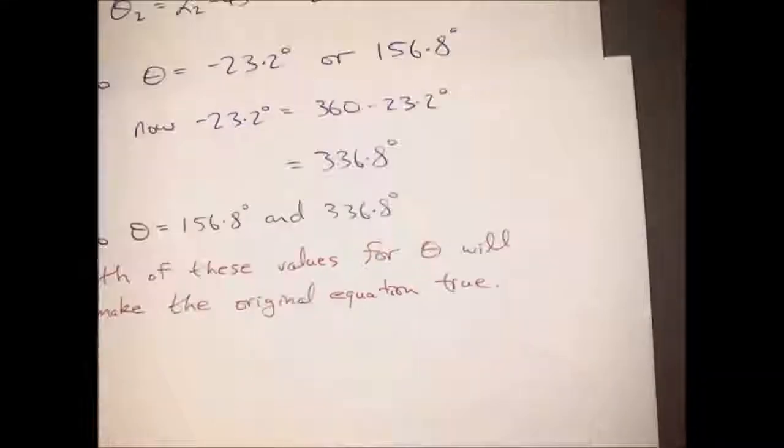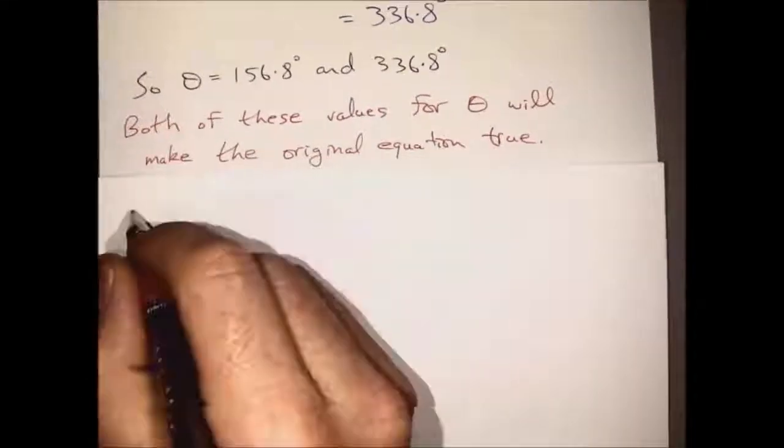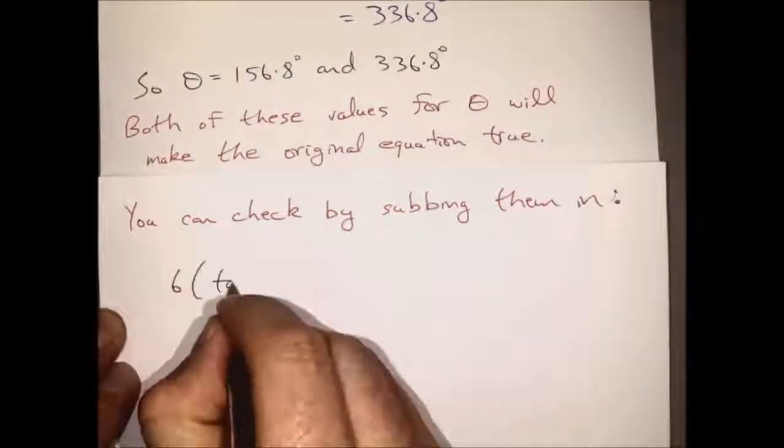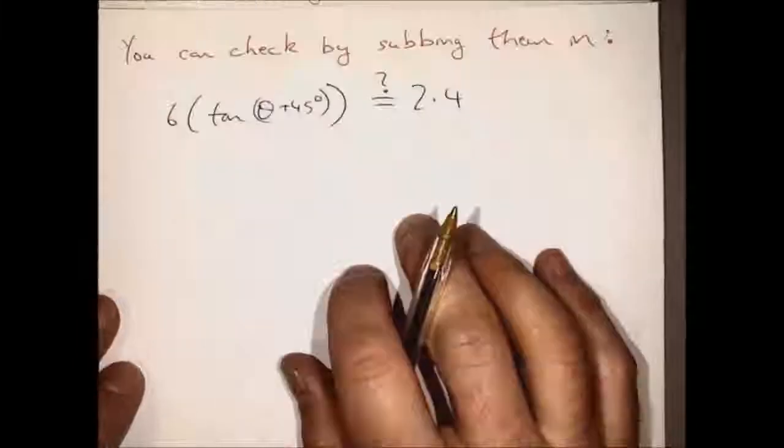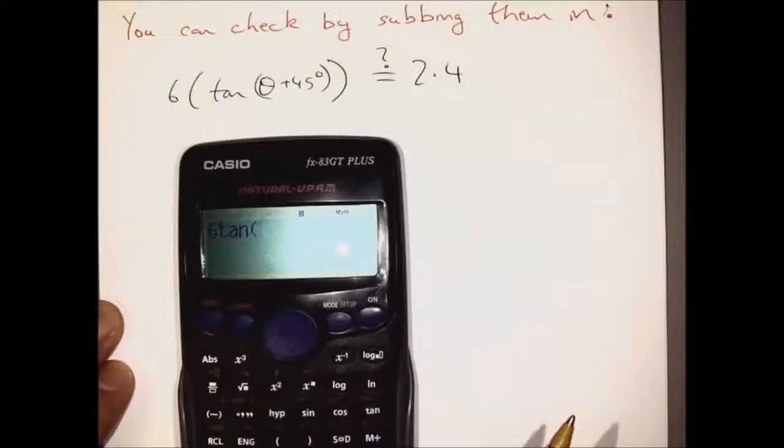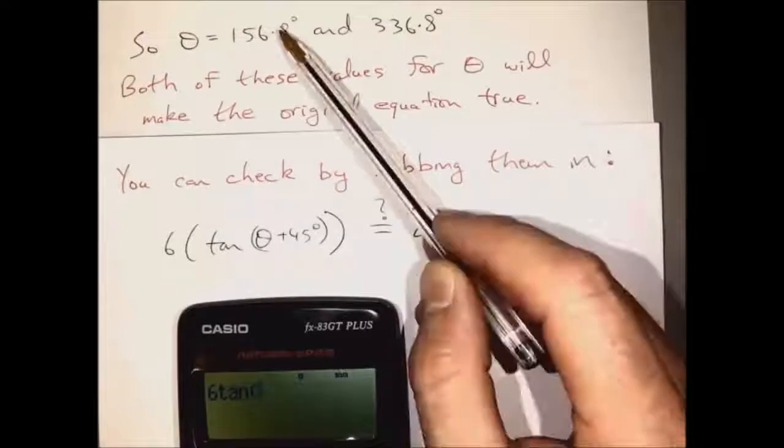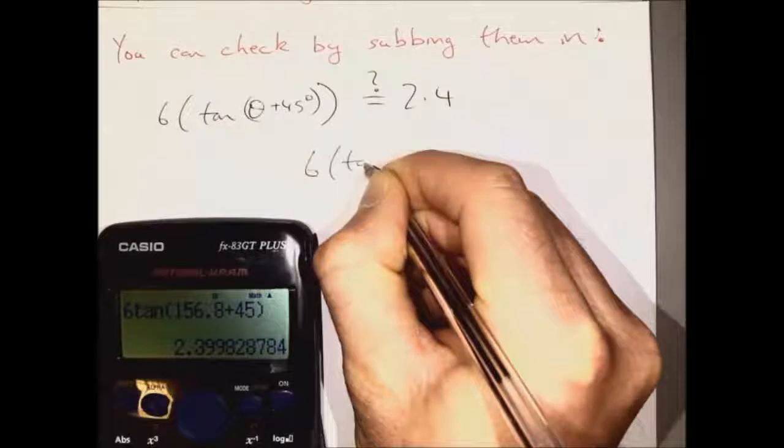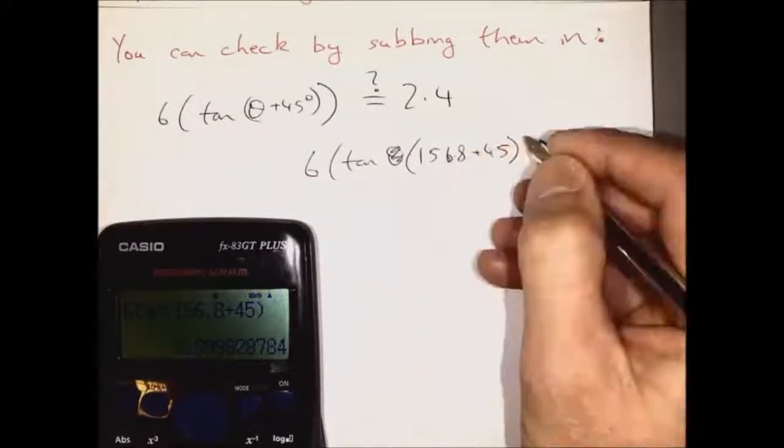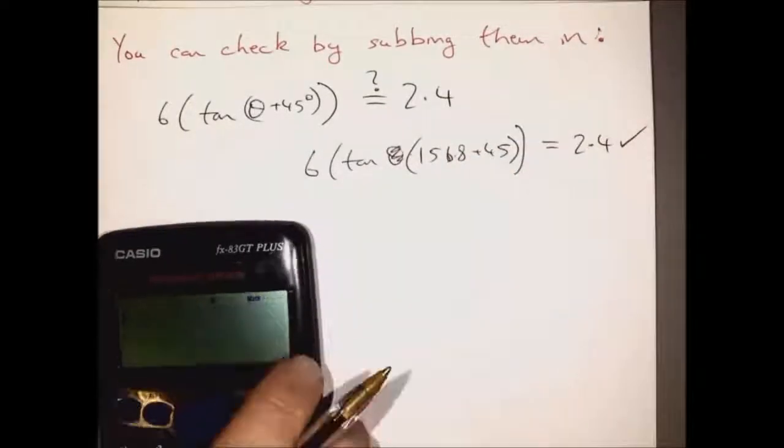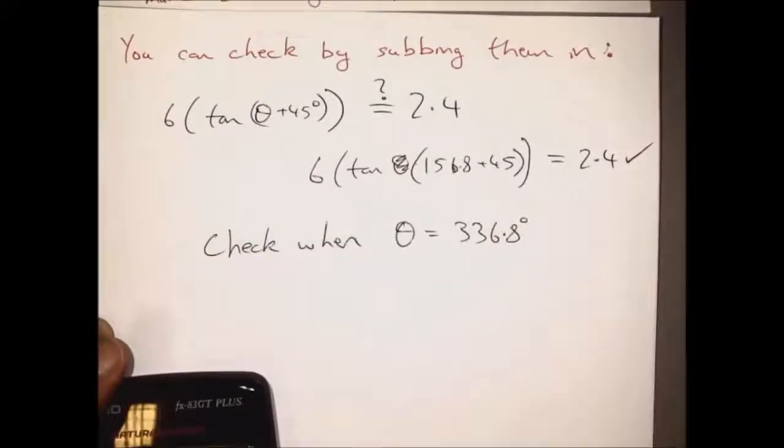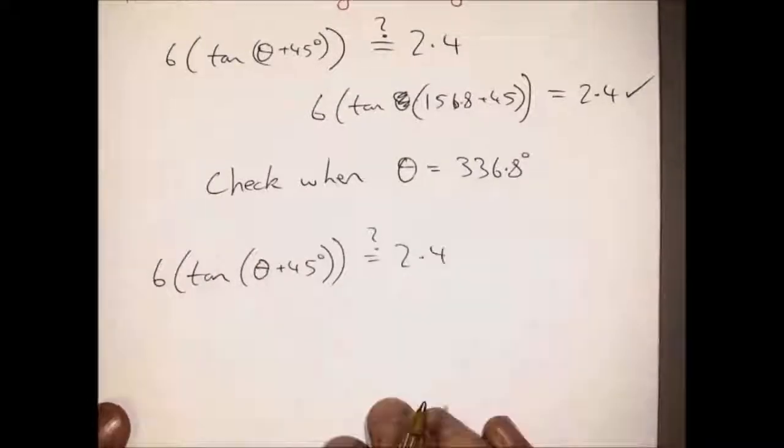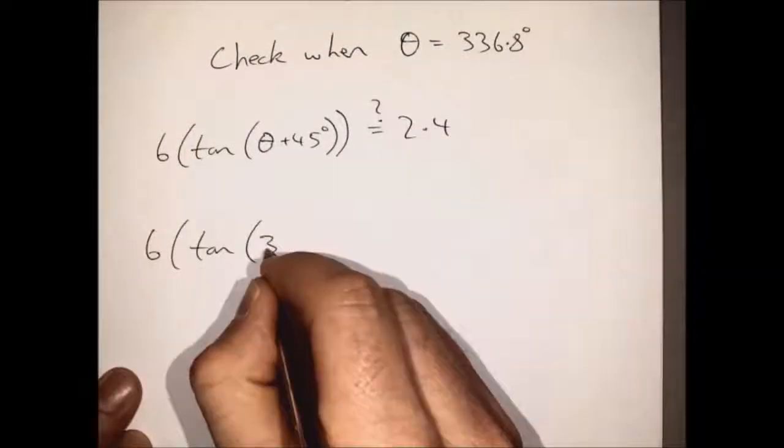Both of these values of theta will make the original equation true, and we can check these by subbing them into the original equation. So first we get 6 tan, and for theta put in 156.8 plus the 45 and check it out there, and it does come to 2.4. And now we can use theta equals 336.8 degrees, and we should also get 2.4.